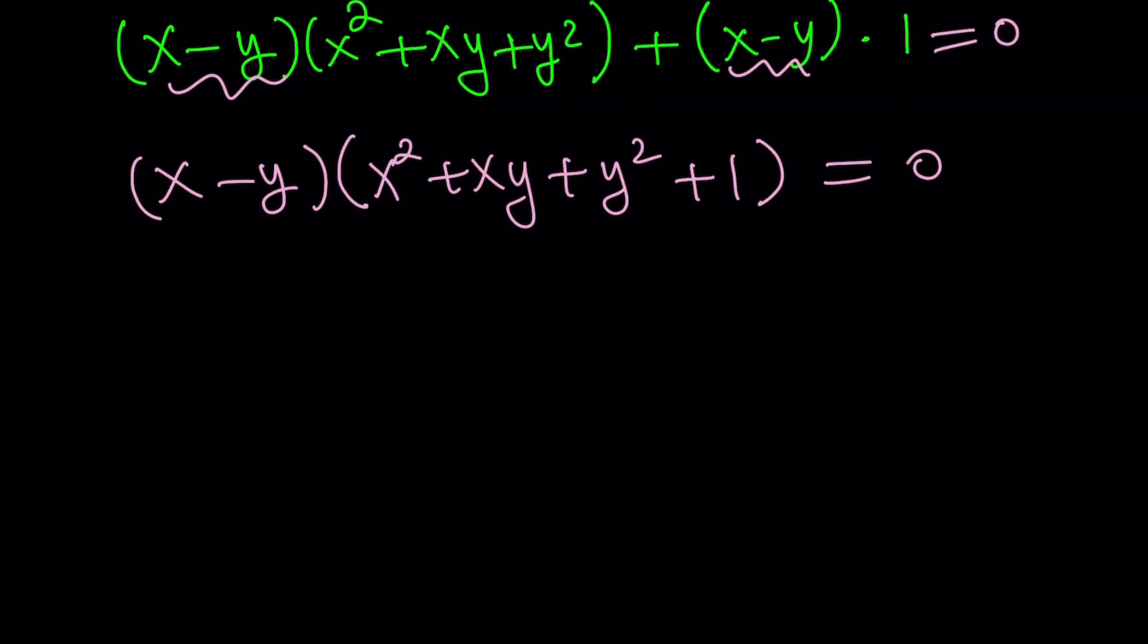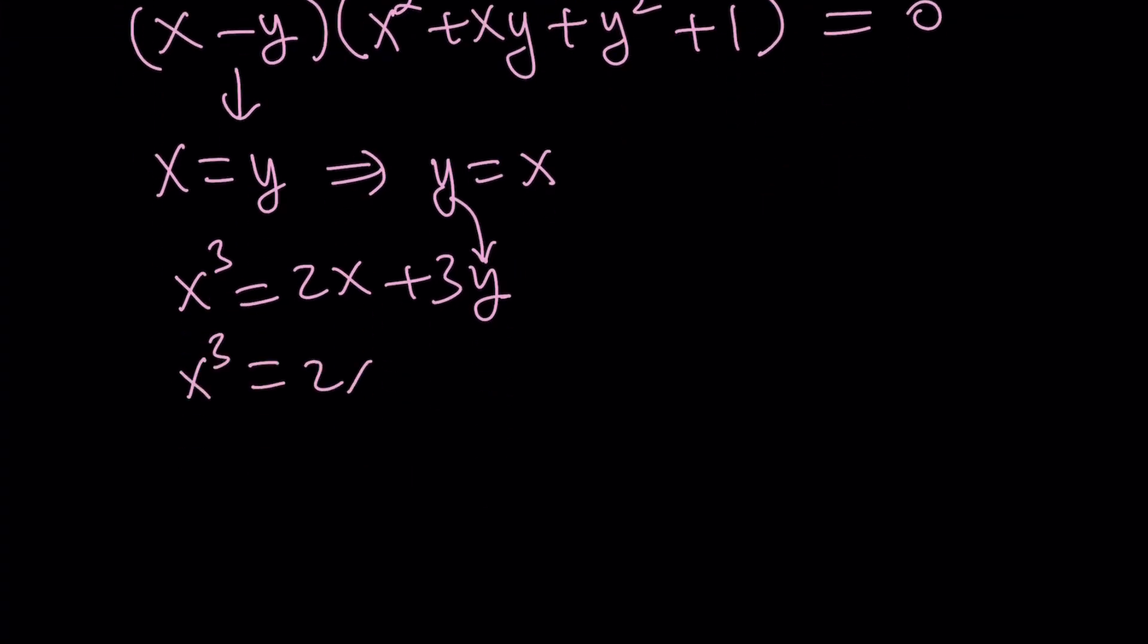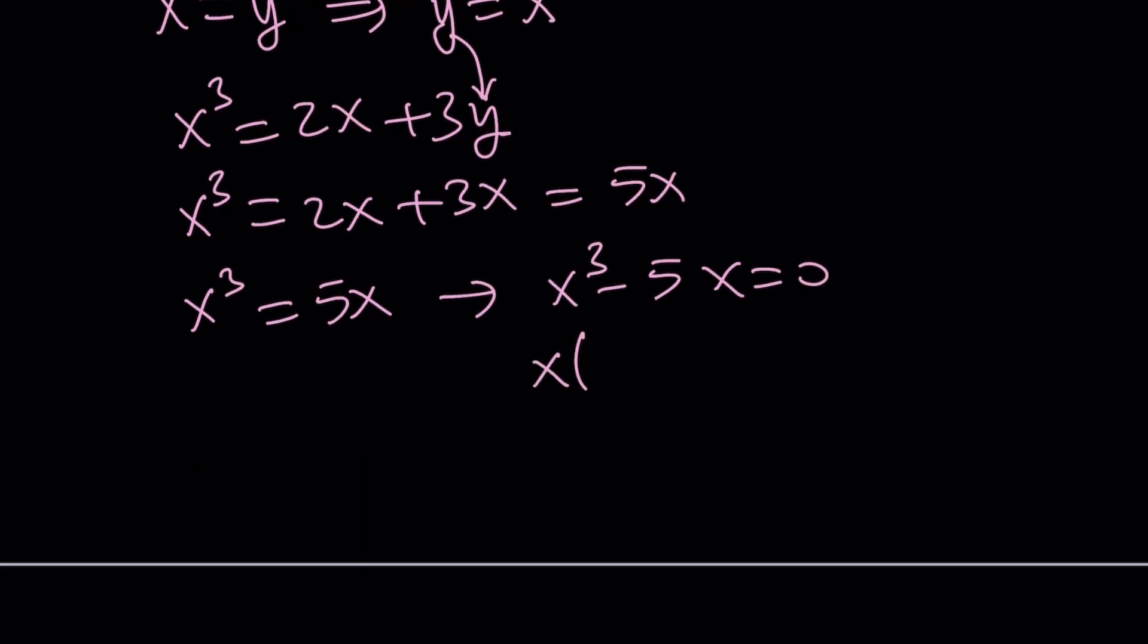If we set x - y equal to 0, from there we get x = y. And then the second equation we're going to look at later. So let's see what y = x means in this context. From the first equation, x³ = 2x + 3y, and if we replace y with x here, we get x³ = 5x. So x³ - 5x = 0. If you factor out x, you get x² - 5 = 0.